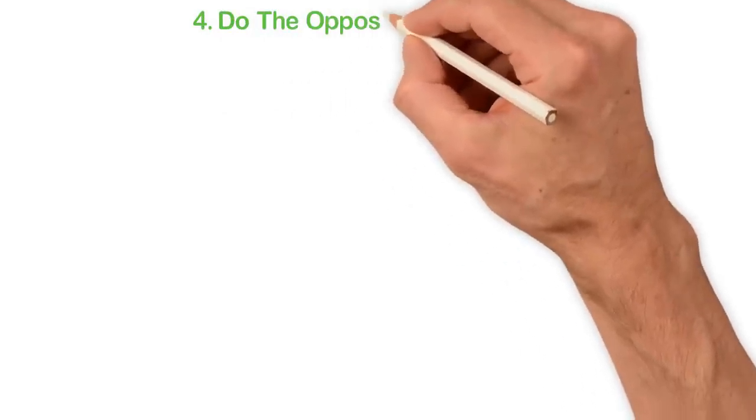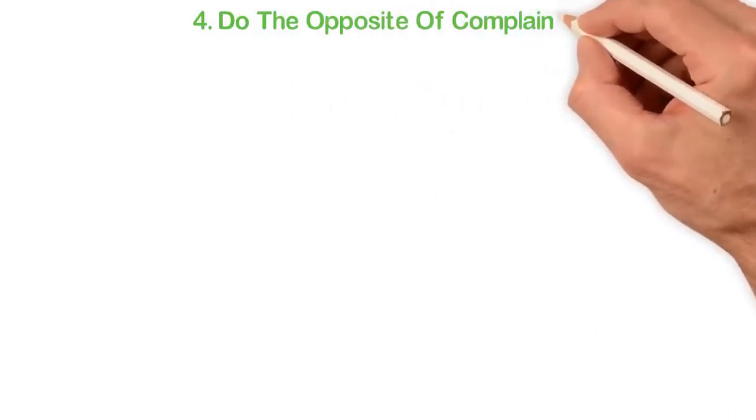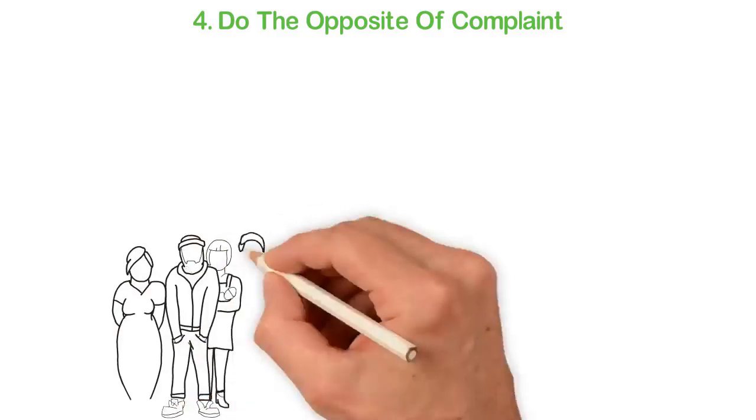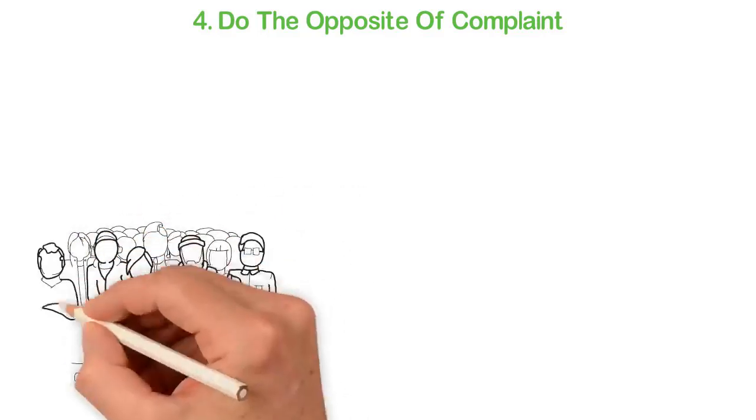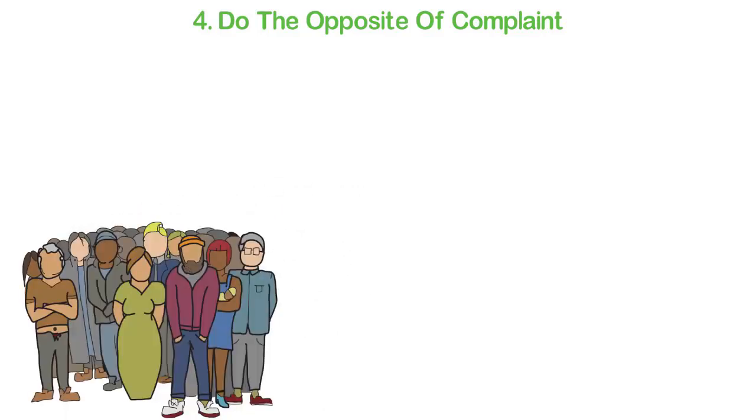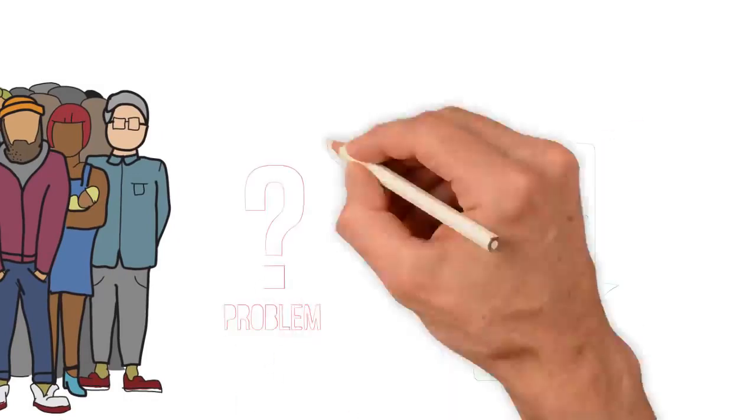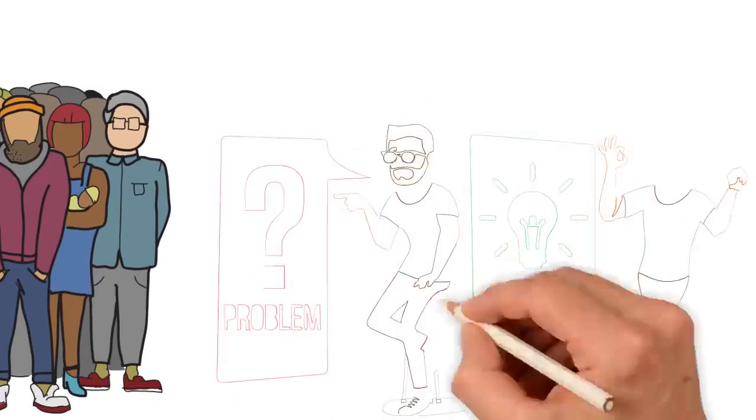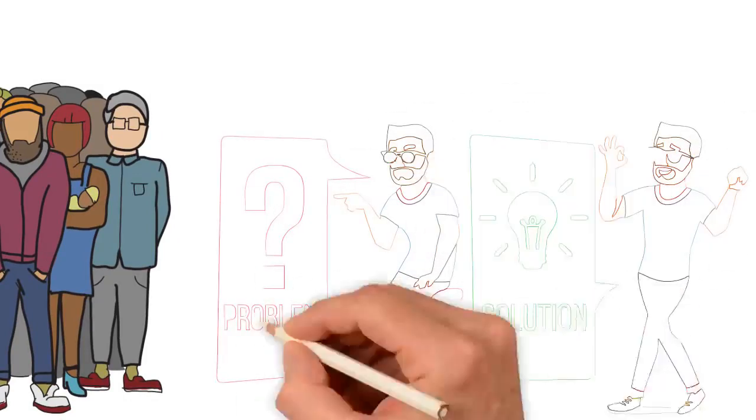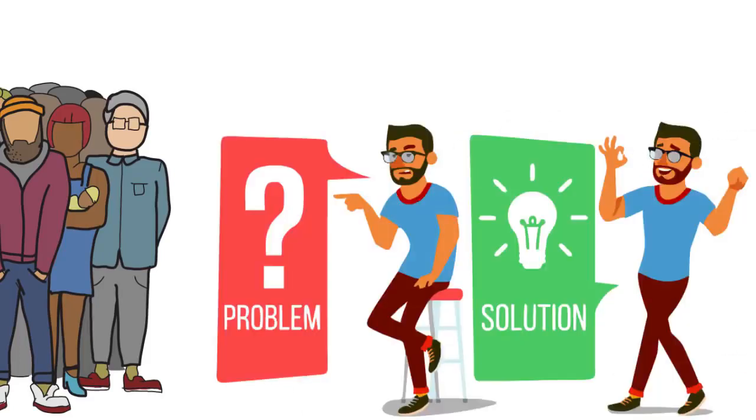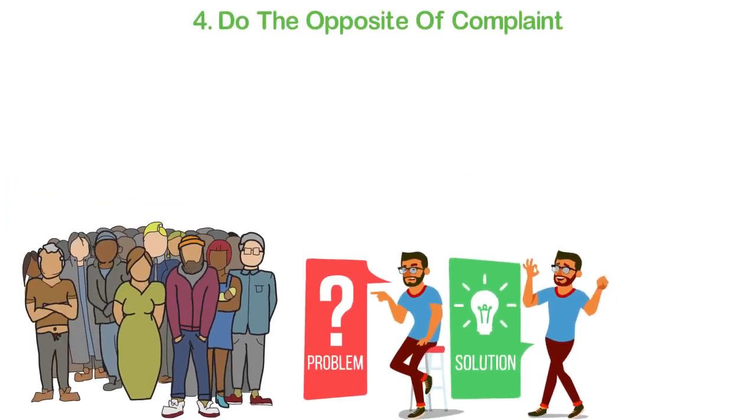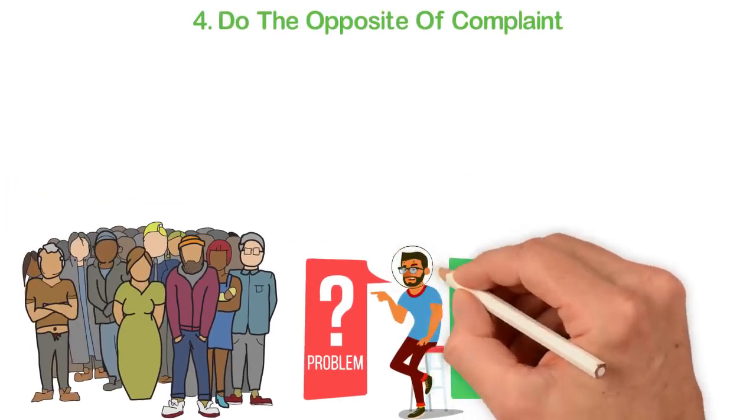Fourth, do the opposite of complaint. Everywhere you look in the world, you're going to see everyone complaining about everything. That's what we're trained to do because that's the easiest thing to actually do. Who on earth cannot open his mouth and complain about anything? What most people cannot do is to work towards solutions because this is a lot of work. Unfortunately, that's what you have to do. If you truly want to build a great business, you have to stop complaining about anything that's wrong.